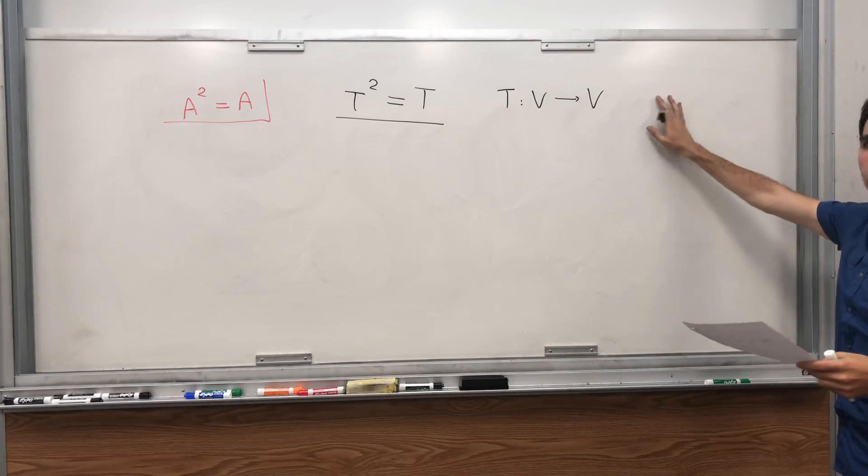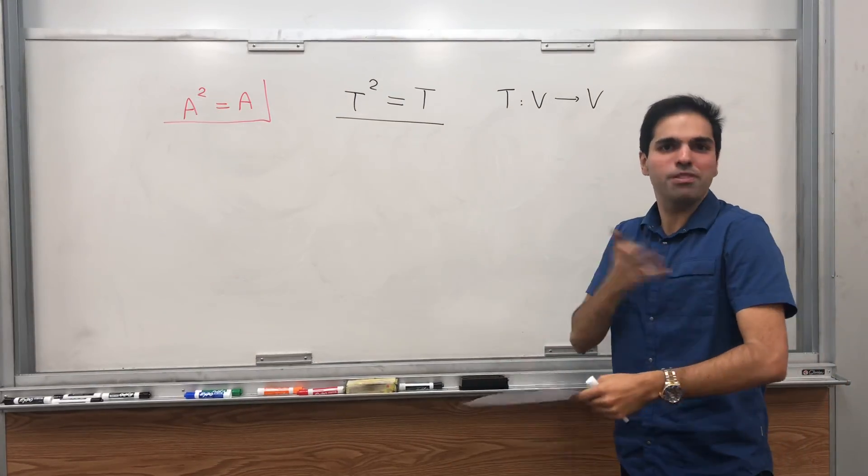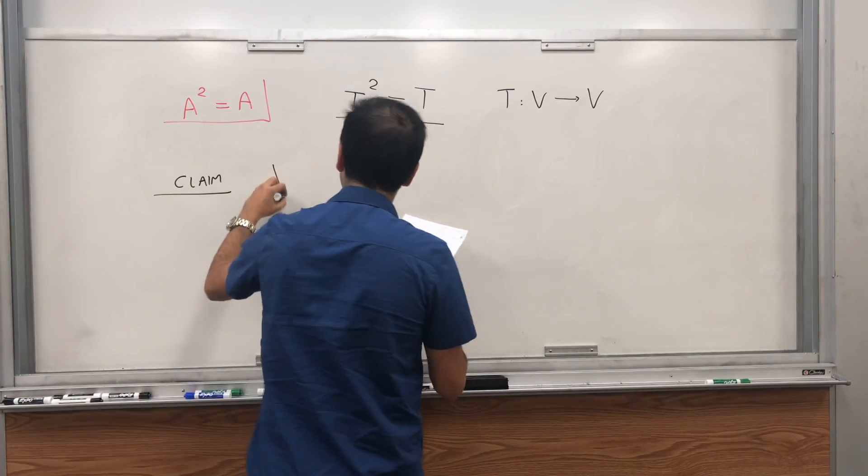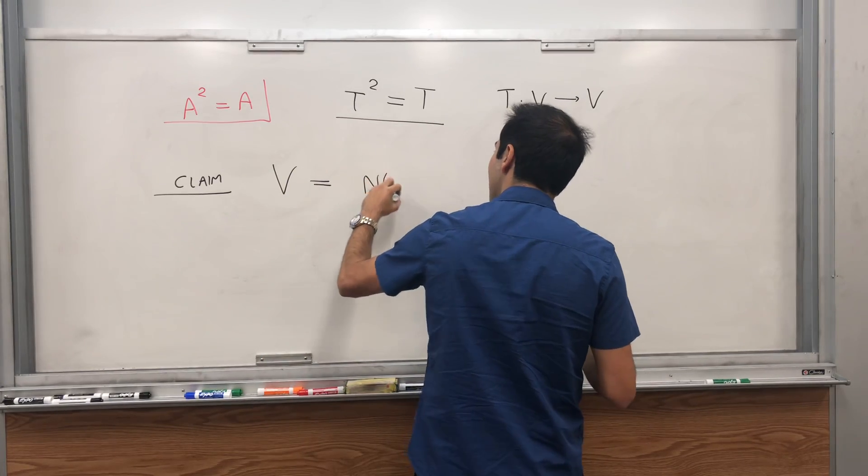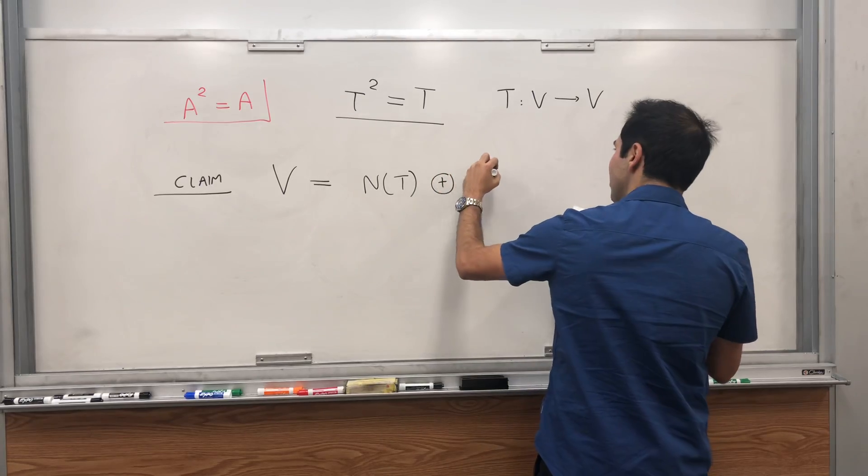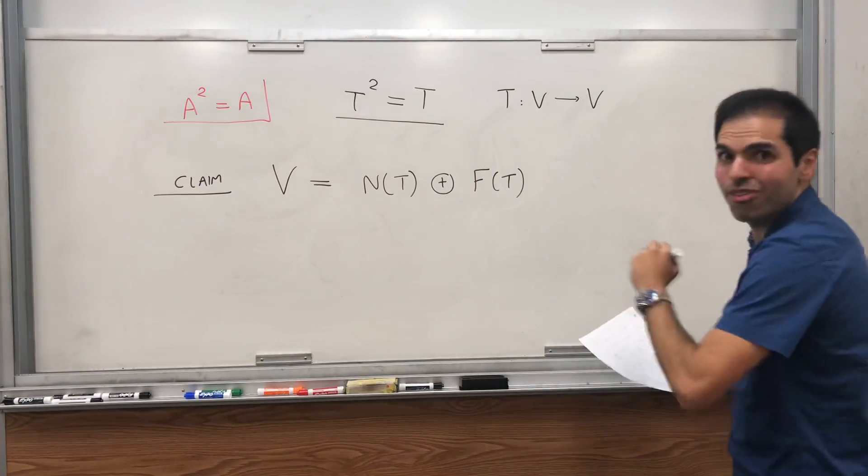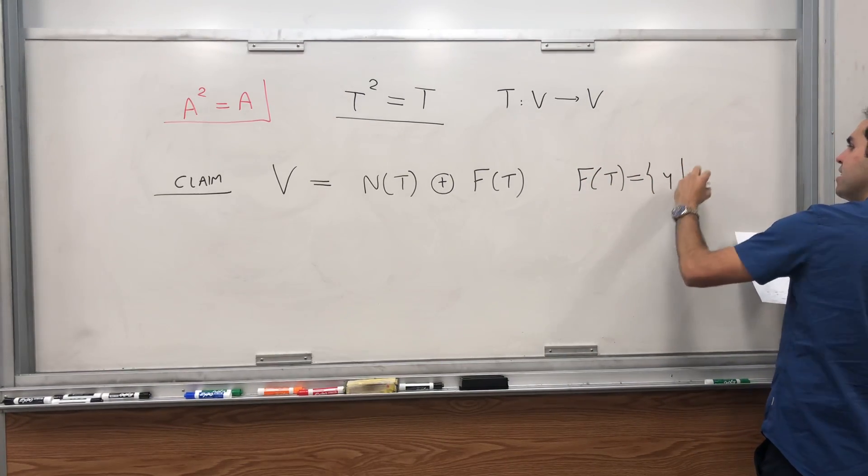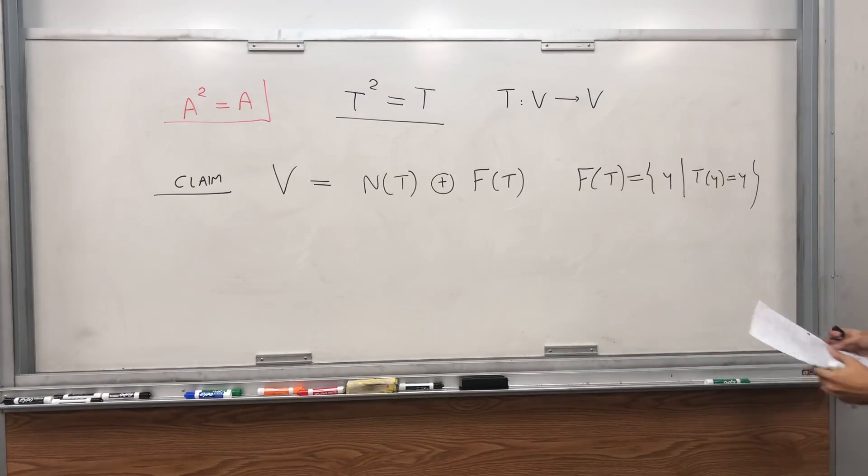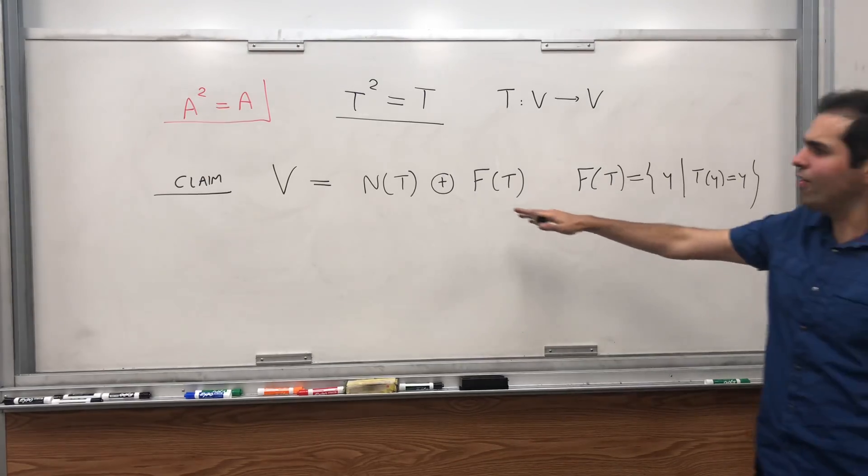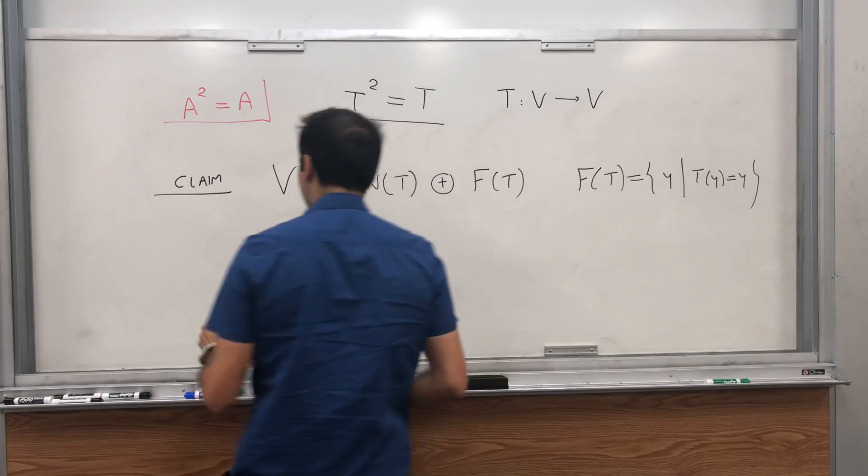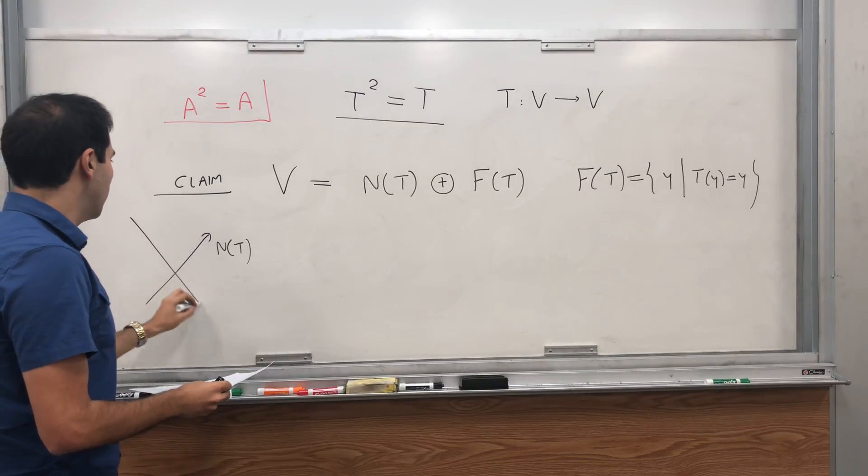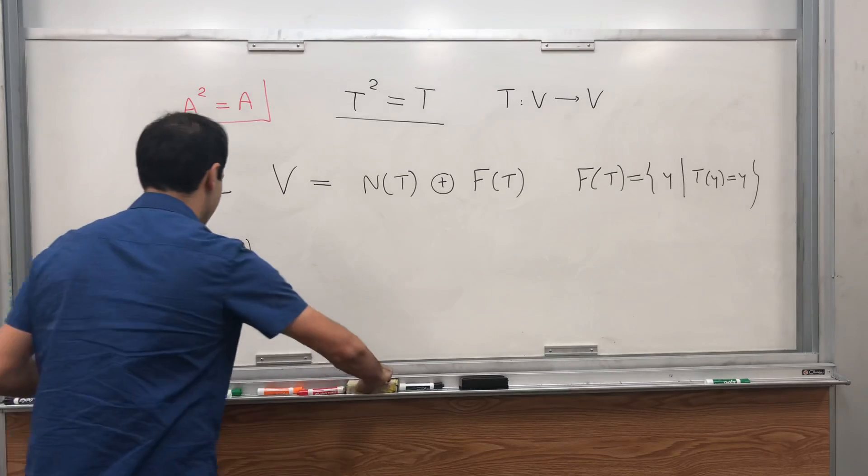It turns out you can decompose the vector space into two very nice subspaces or axes, if you want. So claim, actually V equals to the following. It's the direct sum of the null space of T and what I like to call F(T). So press F for F of T. And the reason I write F, it's because it's a set of all fixed points.